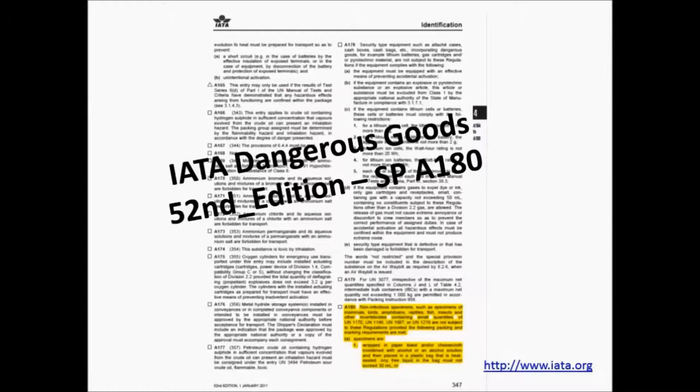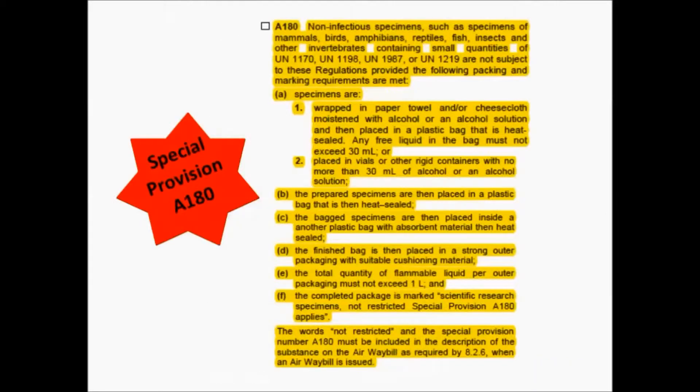In the United States, ethyl alcohol is regulated as a dangerous good. Shipping benthic macroinvertebrates preserved in ethyl alcohol is also regulated. By following special provision A180, organizations can ship their biological samples preserved in ethyl alcohol without having hazardous shipping certification or incurring costly shipping bills.